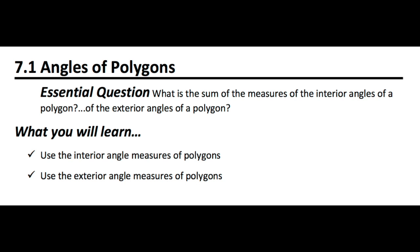This is 7.1 Angles of Polygons. The essential questions are: what is the sum of the measures of the interior angles of a polygon, what is the sum of the measures of the exterior angles of a polygon, and are you expected to use interior and exterior angle measures of polygons to solve different problems?